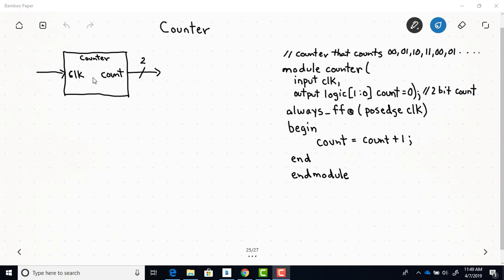So here's a module that I named counter and it just has one input, which is the clock, and one output count. And this particular counter is just a 2-bit counter. So that's the reason for the slash 2 here. A counter will either increment or decrement by 1 at the time of the clock transition.